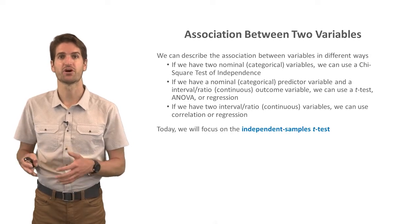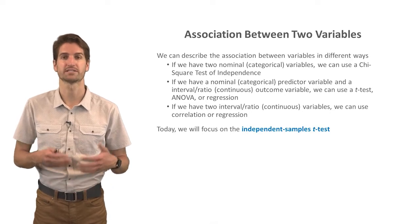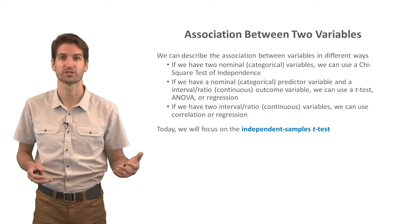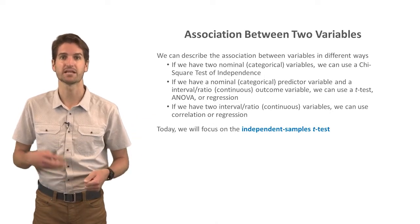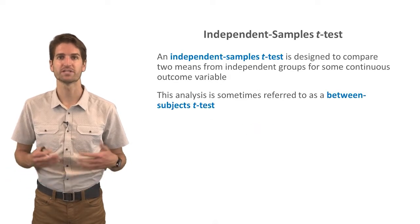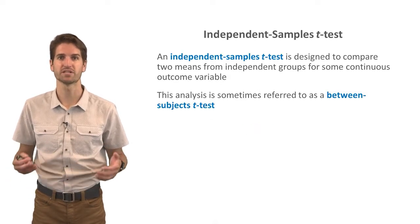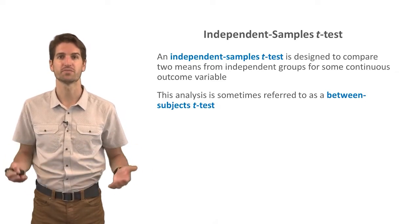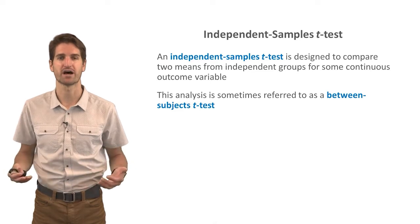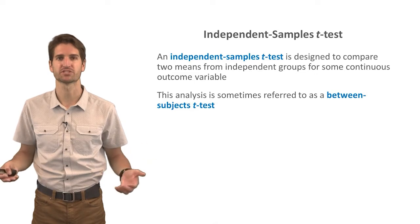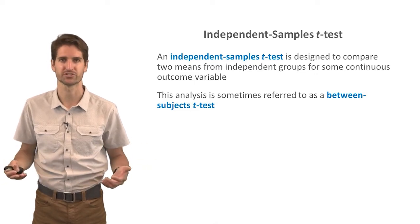We're going to focus on the independent samples t-test today because we are focusing on a test of whether we see an association between a nominal or categorical predictor variable with two levels and an interval, ratio, or continuous outcome variable. An independent samples t-test is designed to compare two means from independent groups for some continuous outcome variable. This analysis is sometimes referred to as a between-subjects t-test.